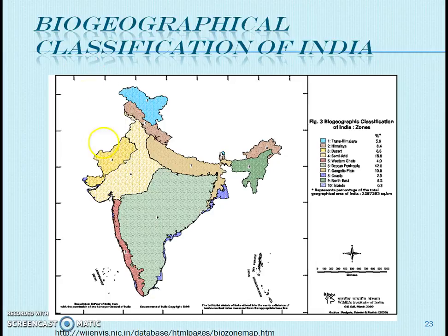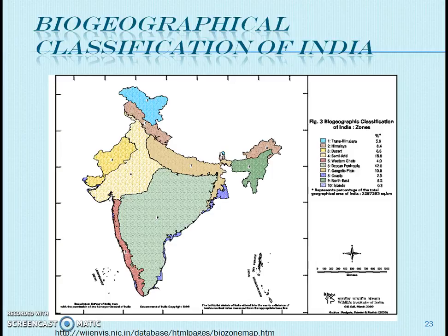The Himalayan region includes mostly the North West Himalaya, West Himalaya, and Central Himalaya. The third region is the Desert region, which lies on the northwestern boundary of India and includes the Kutch and Thar regions. The fourth region is the Semi-Arid region, which represents the area of transition between the Desert and the Deccan Plateau.